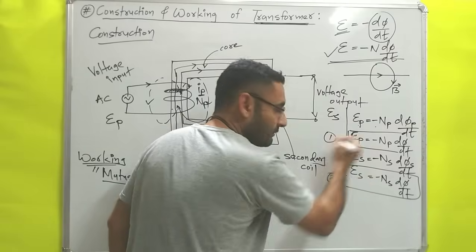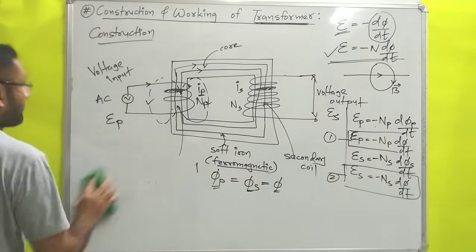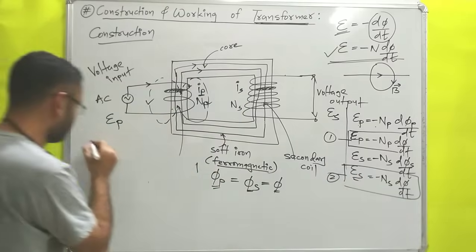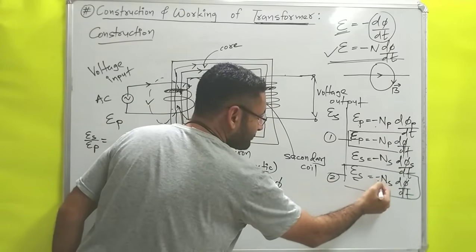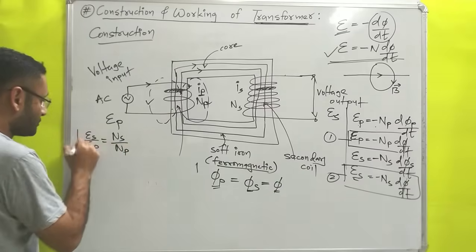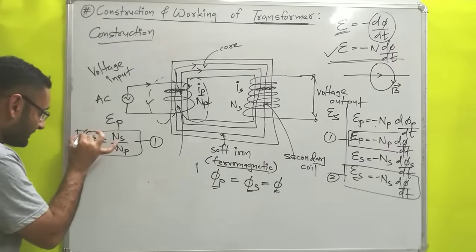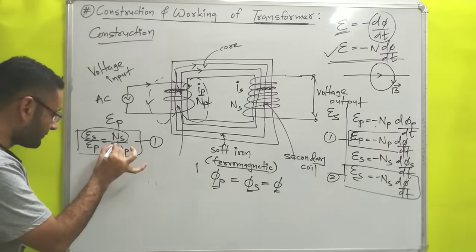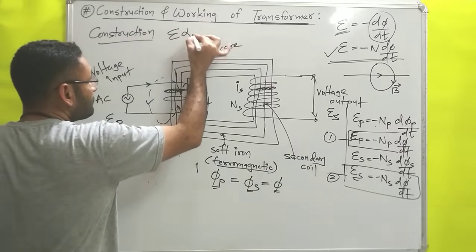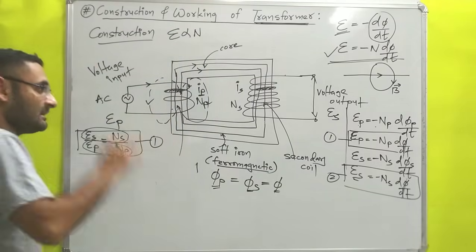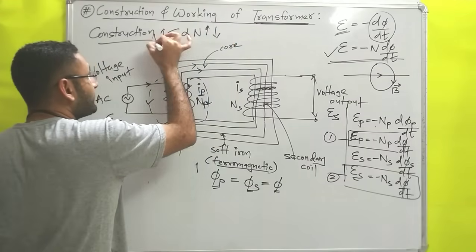Now if we divide equation 2 by equation 1, ES/EP equals NS/NP, since dΦ/dt cancels out. That is the most important equation: whatever EMF or potential there is, it is directly proportional to the number of turns. If you increase the number of turns, EMF increases; if you decrease the number of turns, EMF decreases.